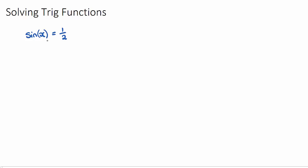If I have my trig function in this form, where sine, or cos, or tan of something equals a ratio, I need to look at these two terms and think: what triangle was that part of? This is part of the triangle where it has 1, 2, root 3, where this is 60 degrees, this was 30 degrees, and 60 is the same as pi on 3 in radians, and 30 is the same as pi on 6 in radians.